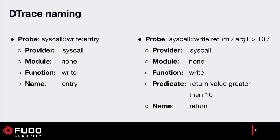Here we have some example DTrace probes. The first has provider syscall, module omitted, function write, on entry — so this probe fires every time the syscall write is executed. The second example is also syscall write but on return, with a predicate that arg1 — the return value — is greater than 10, so it only fires when more than 10 bytes are written.